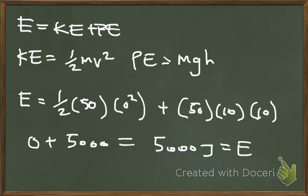I have my equation here. I know that kinetic energy equals one half mv squared and potential energy equals mgh. I plug all the numbers into the equation and I'm left with zero plus 5,000. So the total energy is 5,000 joules.